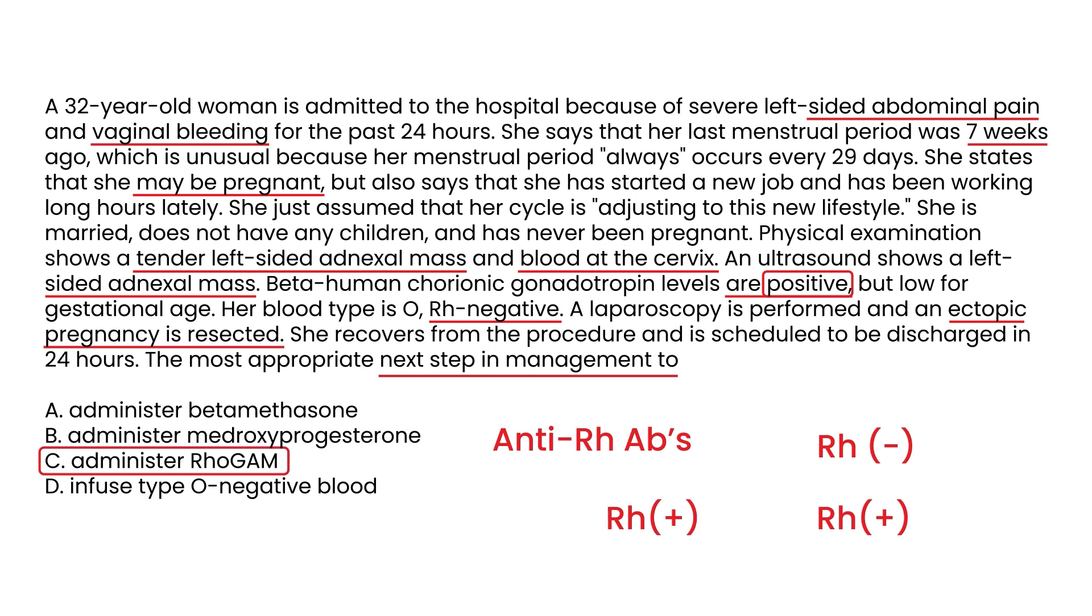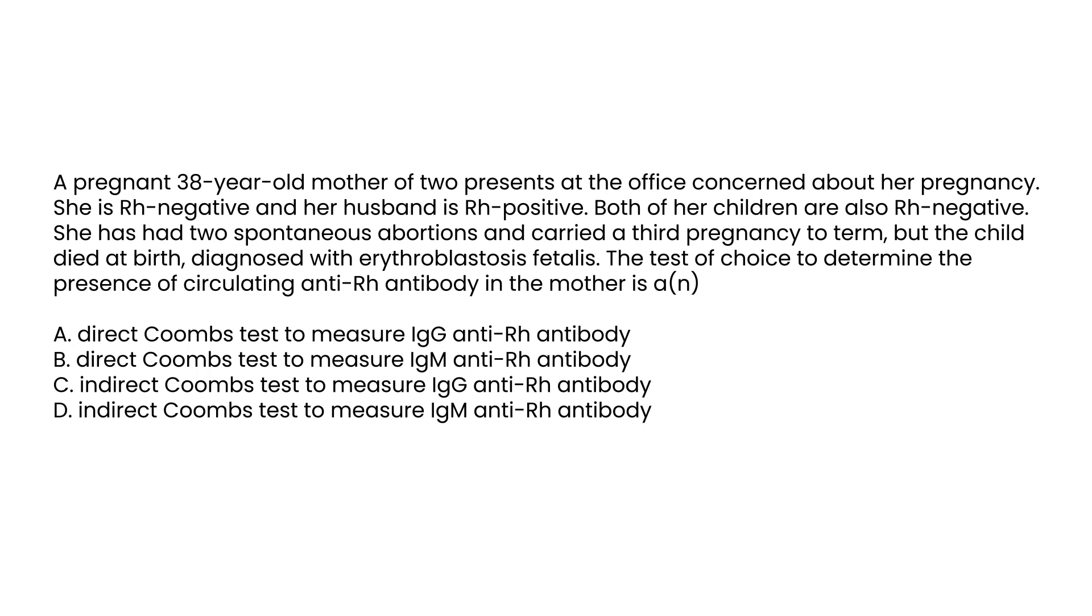Final question: A pregnant 38-year-old mother of two presents at the office concerned about her pregnancy. She is Rh negative, husband is Rh positive. Both of her children are also Rh negative. She has had two spontaneous abortions and carried a third pregnancy to term, but the child died at birth, diagnosed with erythroblastosis fetalis. The test of choice to determine the presence of circulating anti-Rh antibody in the mother is—well, remember which antibody are we talking about? We're talking about IgG. That's the antibody that is produced by the mother in response to Rh positive fetal red blood cells.